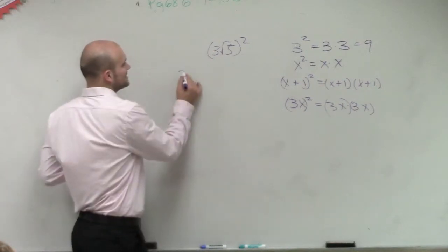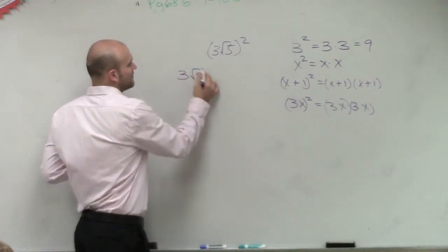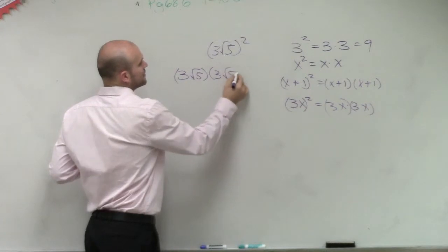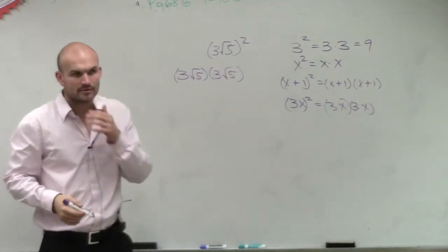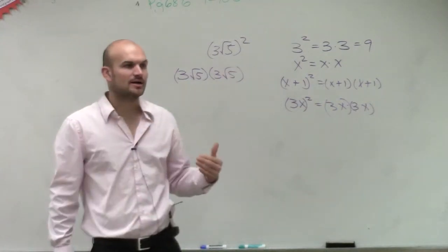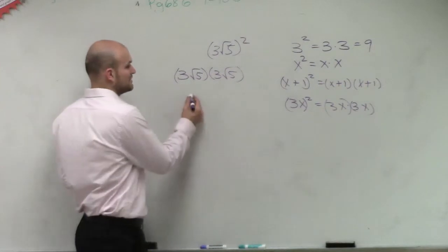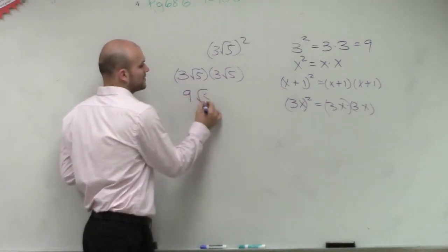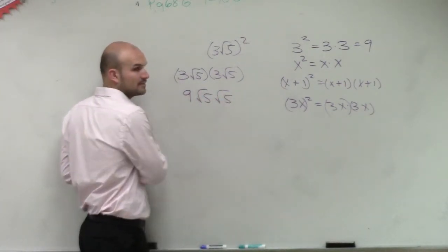So therefore, this means 3 times square root of 5, times 3 times square root of 5. When multiplying, I can multiply 3 times 3, which gives me 9. And then I need to multiply the square root of 5 times the square root of 5.